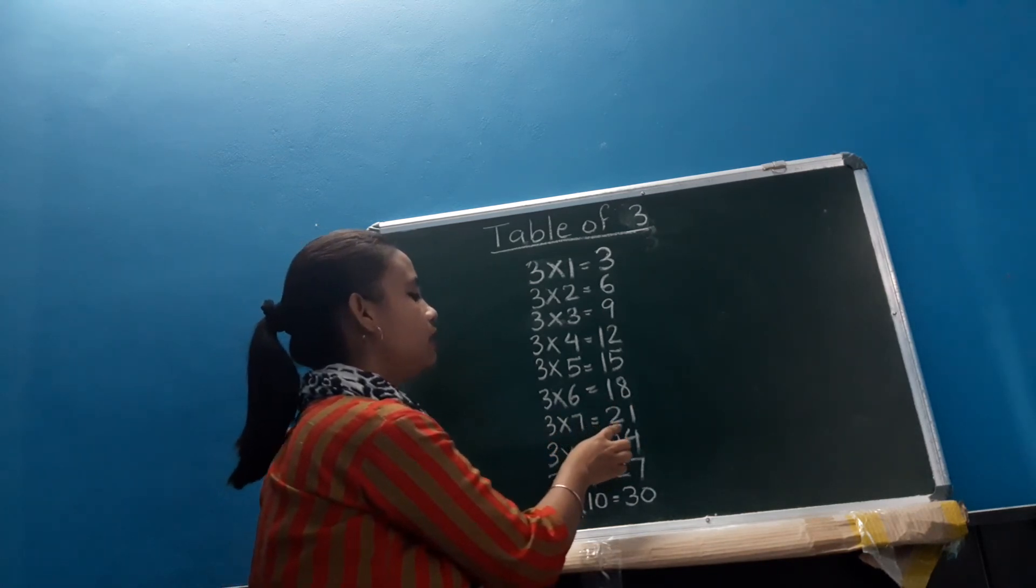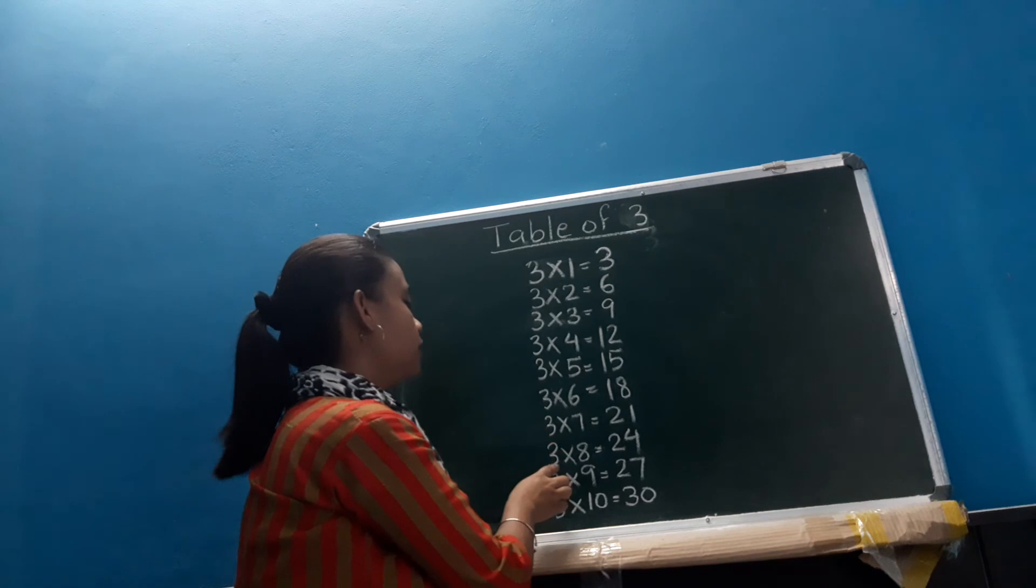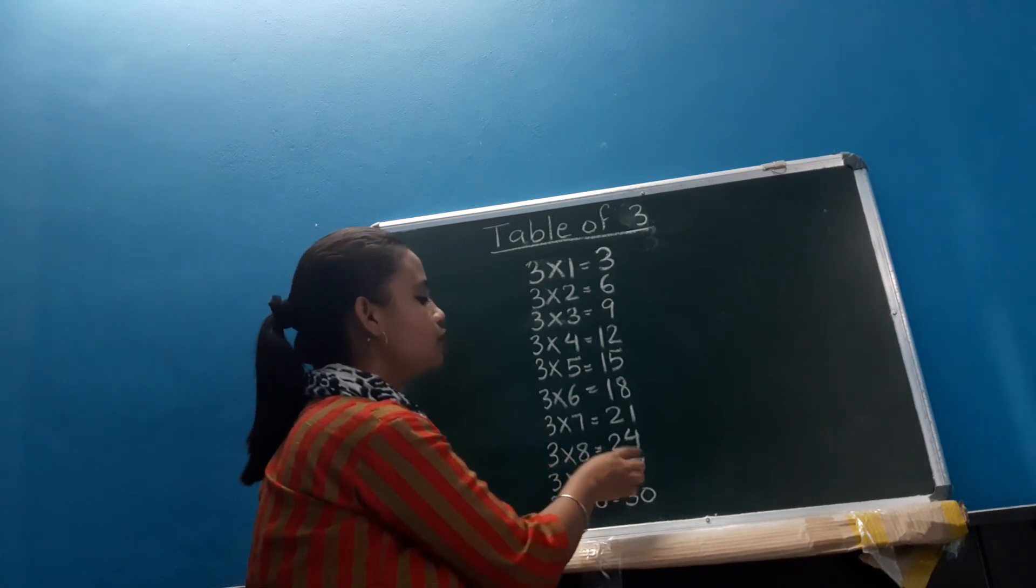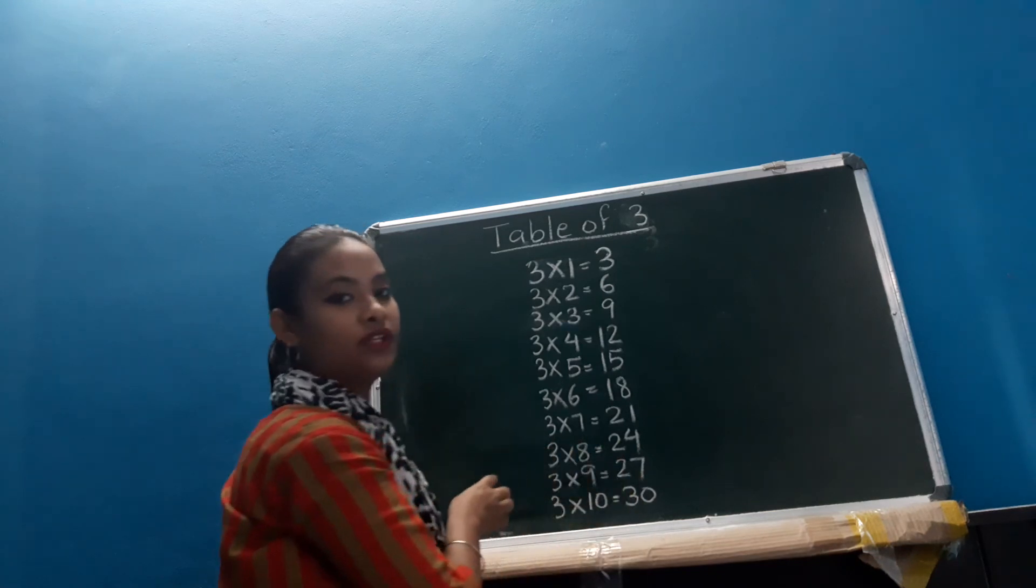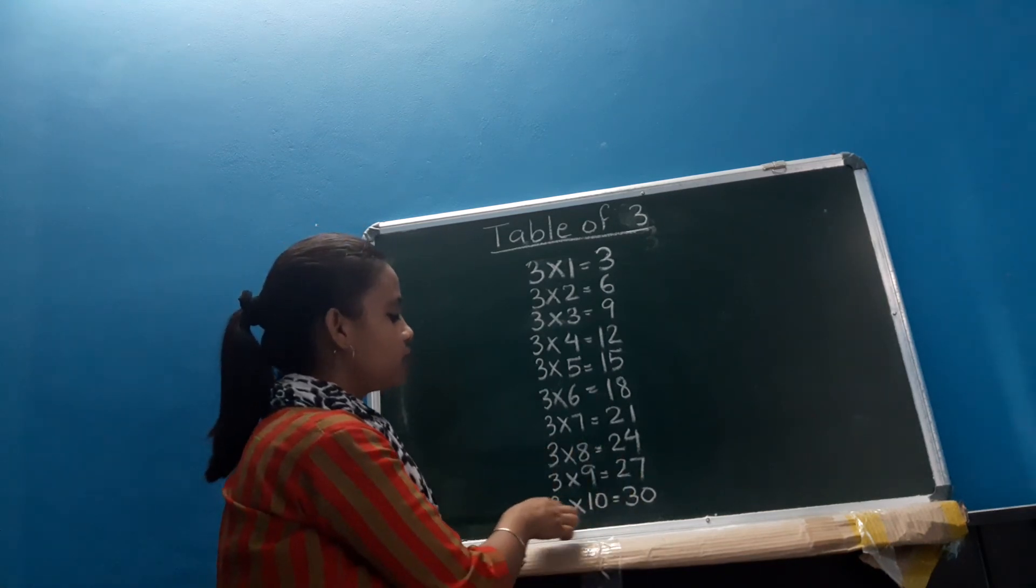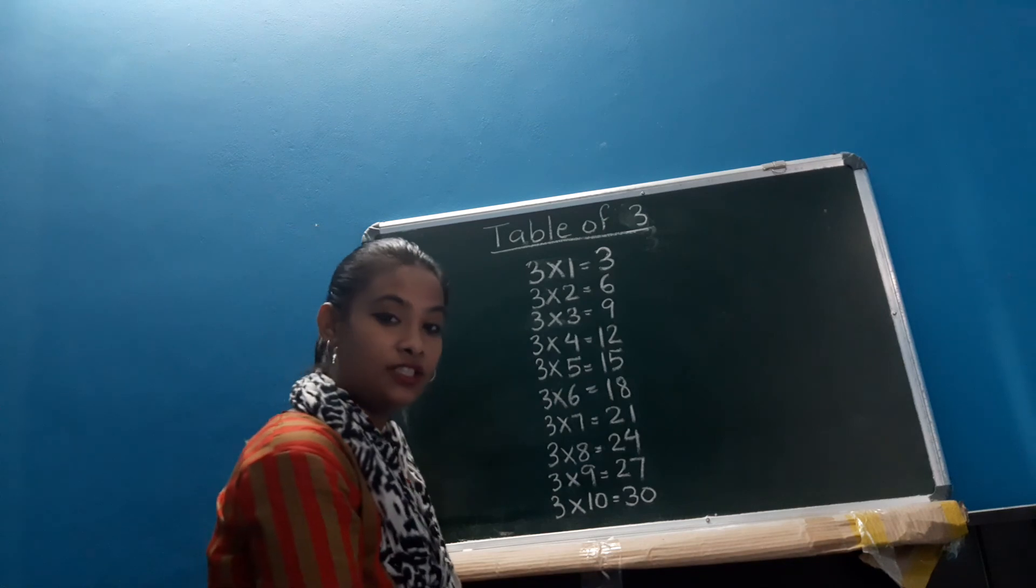3 6's are 18, 3 7's are 21, 3 8's are 24, 3 9's are 27, and 3 10's are 30.